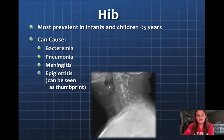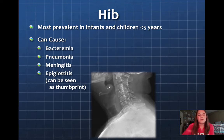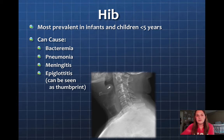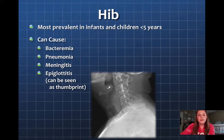HIV is most prevalent in infants and children. Some of the diseases it can cause are bacteremia, which is in the blood, pneumonia in the lungs, meningitis in the meninges which cover the outside of the brain, and epiglottitis. Epiglottitis is more rare, but you can see it on an x-ray — it looks like a thumbprint, with the epiglottis enlarged.